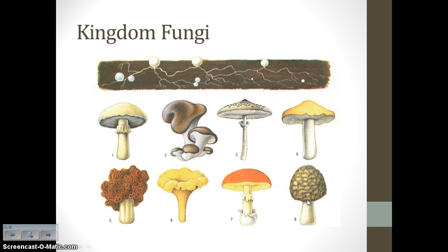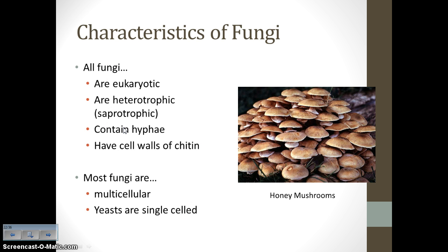We are now switching gears and moving to kingdom fungi. Fungi are in domain eukarya, so they are eukaryotic. Fungi are heterotrophic and saprotrophic — they are decomposers. Do not tell me that fungi are autotrophic; they are not plants and do not photosynthesize. They contain hyphae, and they have cell walls made of a substance called chitin, which is the same stuff that makes up the exoskeletons of arthropods. Most fungi are multicellular, but there are some single-celled fungi — those are yeast.